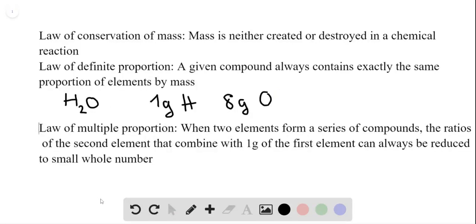And the law of multiple proportions says that when two elements form a series of compounds, the ratios of the second element that combine with 1 gram of the first element can always be reduced to a small whole number.